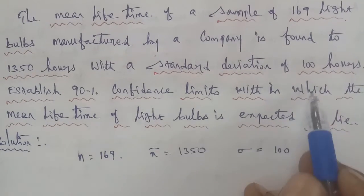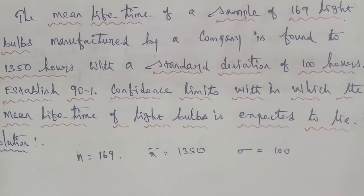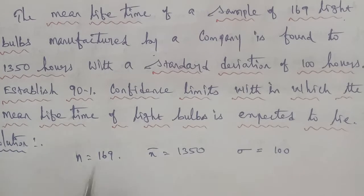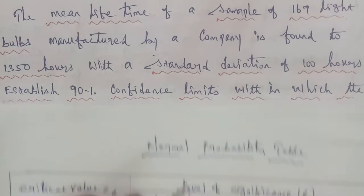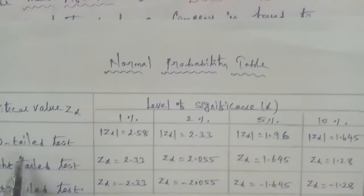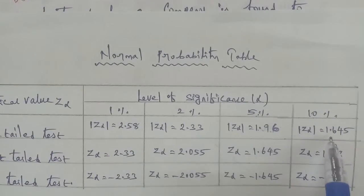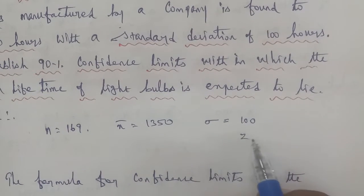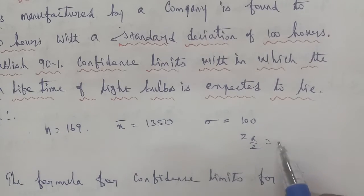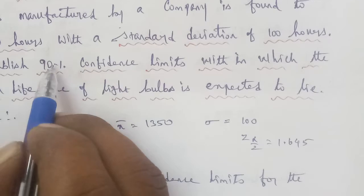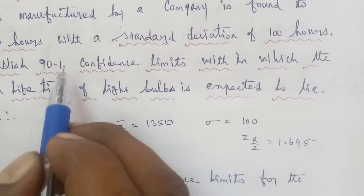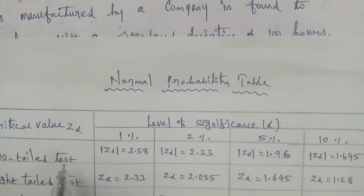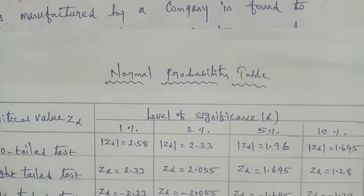The question asks for 90% confidence limits. The confidence level is 90%, so 100% minus 90% equals 10%, therefore alpha equals 10%. So alpha by 2 is 5%. From the table, z(α/2) at 5% is 1.645.